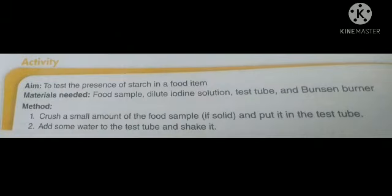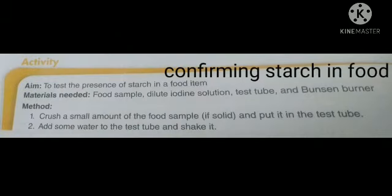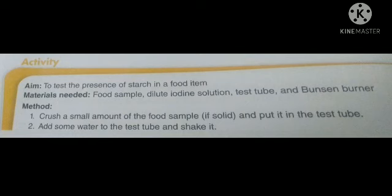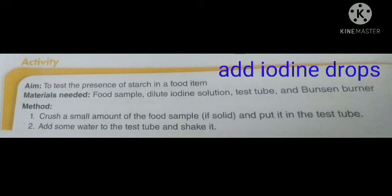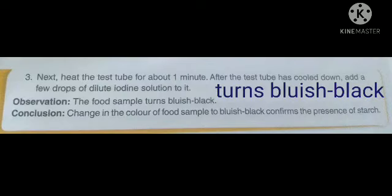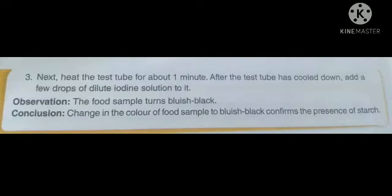Let us now test the presence of starch in a food item. The materials required would be food sample, dilute iodine solution, test tube and Bunsen burner. The method requires crushing a small amount of food sample and putting it in the test tube, adding some water and shaking it, then heating the test tube for about a minute. After it cools down, add a few drops of dilute iodine solution. The food sample turns blueish black if it contains starch, confirming the presence of starch.